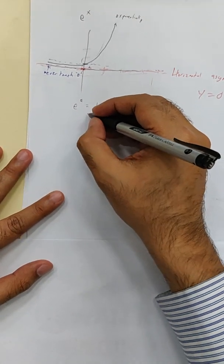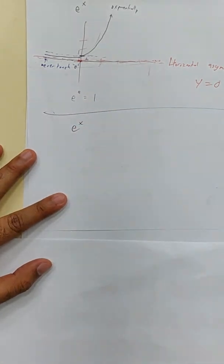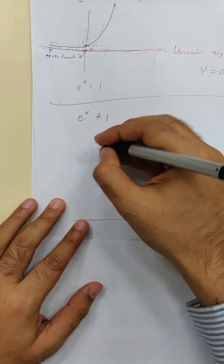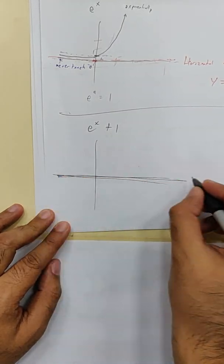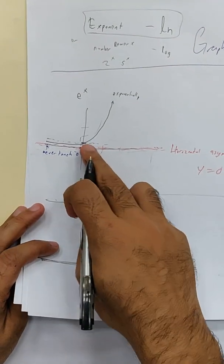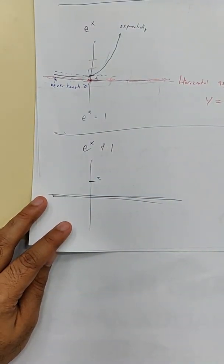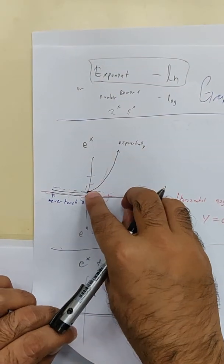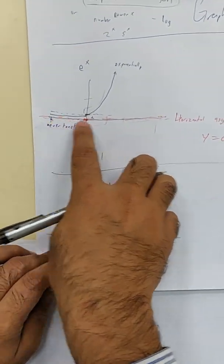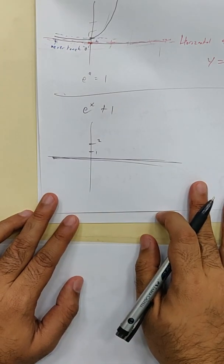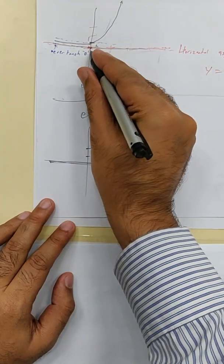Now, what if I write e^x + 1? It shifts up. So instead of the intercept being at one, plus one makes it two. And instead of not touching zero, now the graph doesn't touch y equals one. So the horizontal asymptote becomes y equals one.